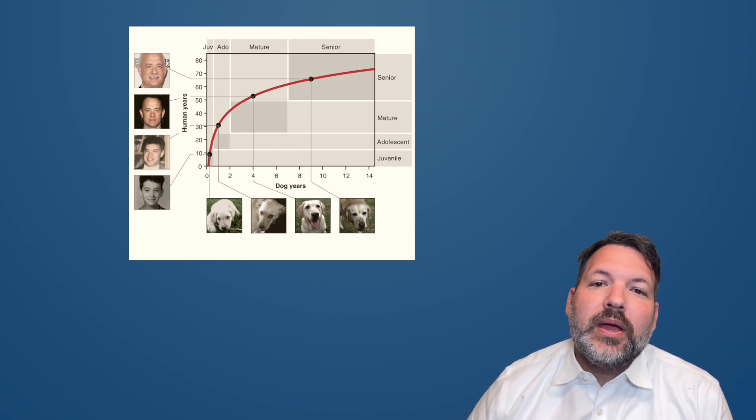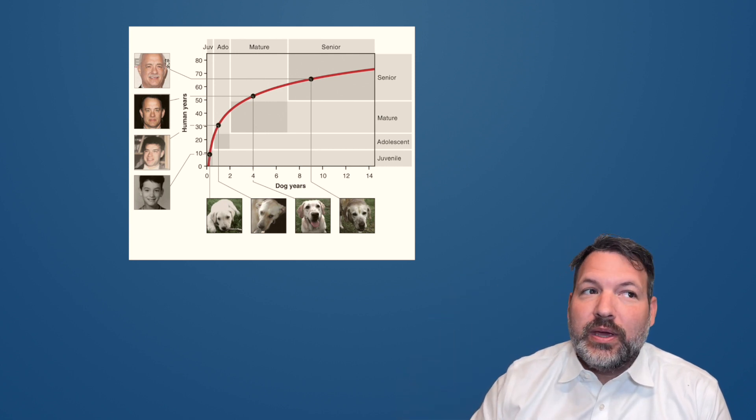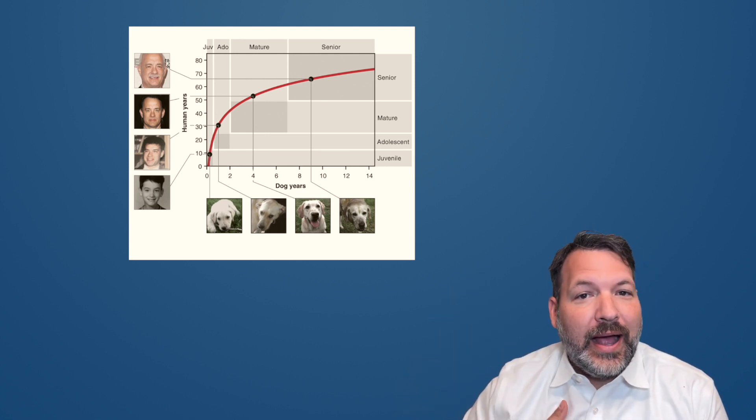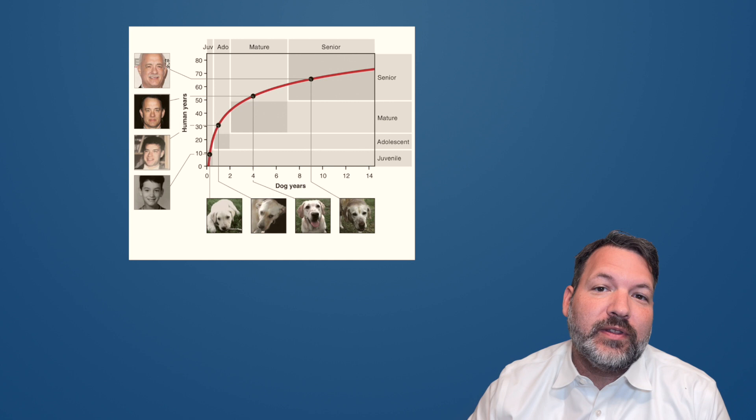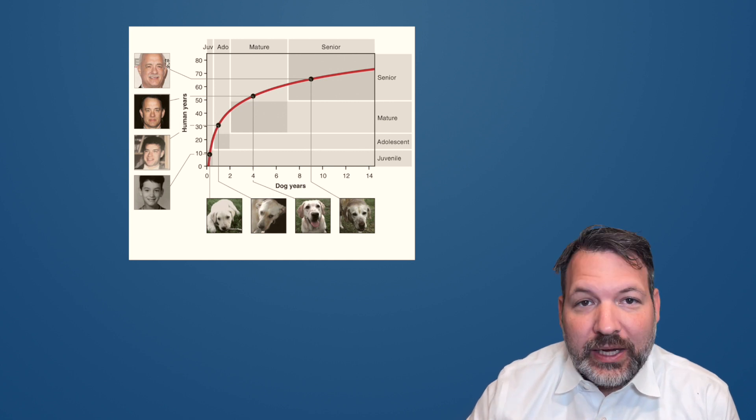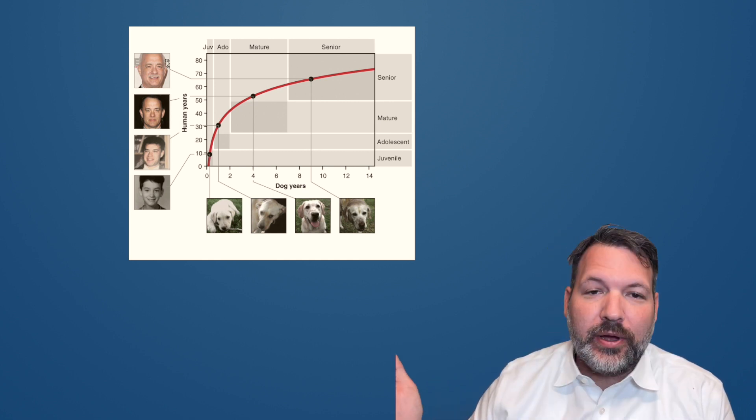So if you look up the original paper, you can see this graph that I've got above me, and this is in the original paper. I did not make this up. I absolutely love that they illustrated human aging with pictures of Tom Hanks. He is the paragon. What are you gonna do?